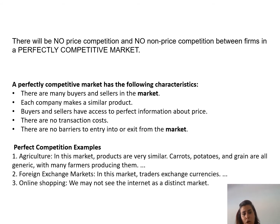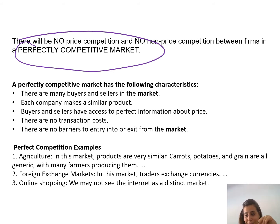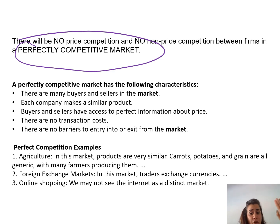Now I will be talking about the features of competitive markets, and mainly perfect competition. There will be no price competition and no non-price competition between firms. Because in perfect competition, the firms are price takers and they are producing identical or homogeneous products. So there will be no point for a firm in a perfectly competitive market to advertise its products, because all of them are producing the same thing. This is perfect competition — not monopolistic competition.